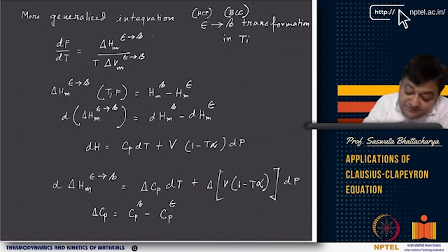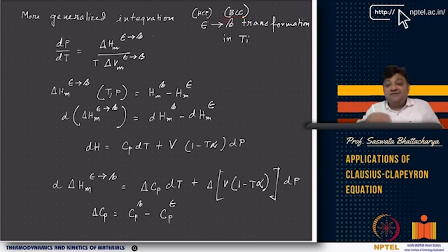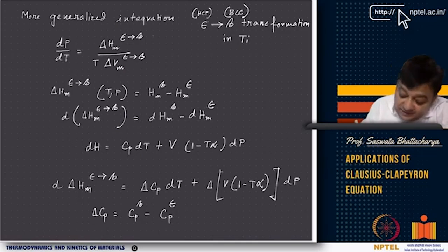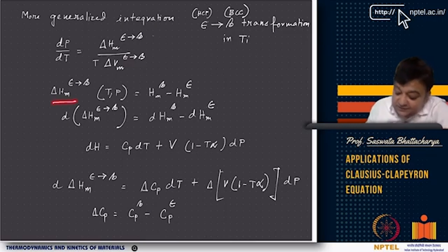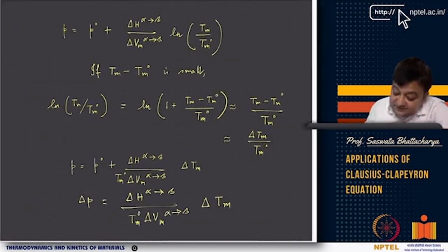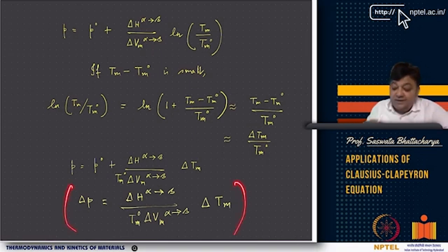For example, consider the epsilon-to-beta transformation in titanium, where epsilon is the HCP phase and beta is the BCC phase. In the pressure-temperature diagram, the slope is dP/dT = delta H_m (epsilon-to-beta) / (T · delta V_m epsilon-to-beta). If delta H_m and delta V_m are independent of temperature and pressure, this becomes a very simple relation. However, if delta H_m is a function of temperature and pressure, then H_m^beta and H_m^epsilon are each functions of temperature and pressure.